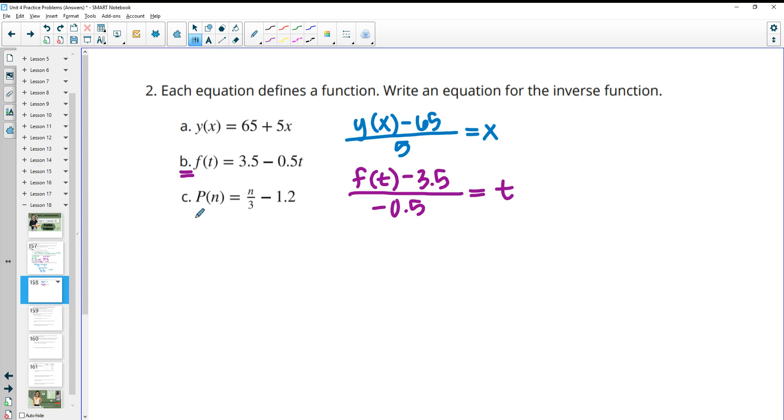Then this last one, we're going to take N divided by 3, then subtract 1.2. So to do that backwards, we're going to add 1.2 and then we're going to multiply by 3. And you want to make sure you put parentheses because you want to multiply this whole thing by 3. And then that gives us back our N.